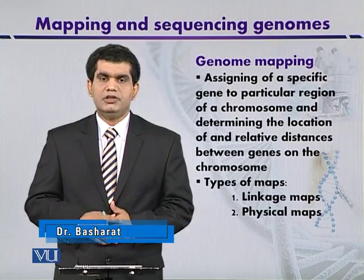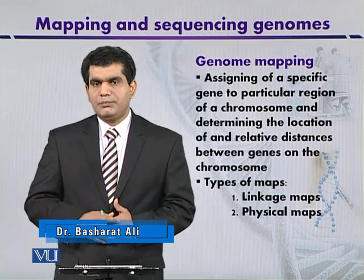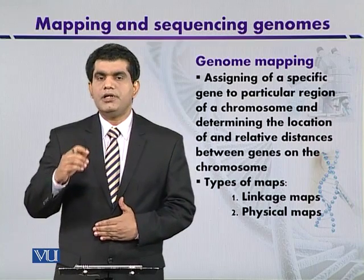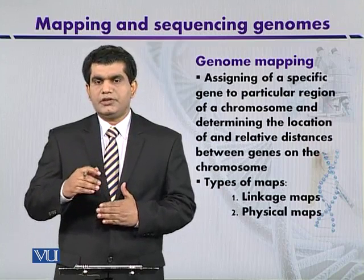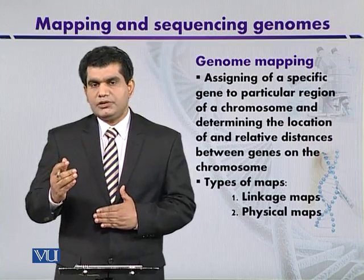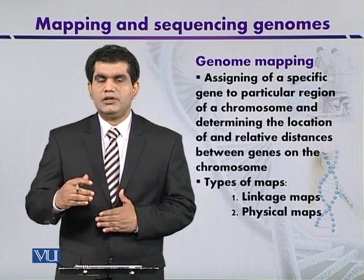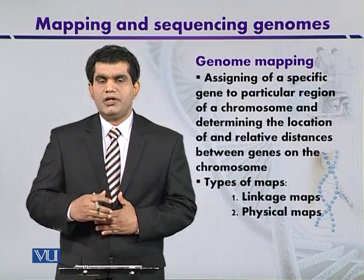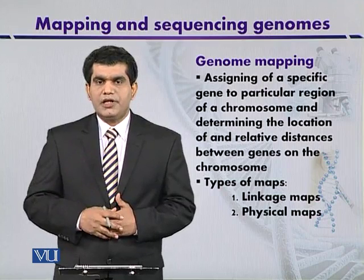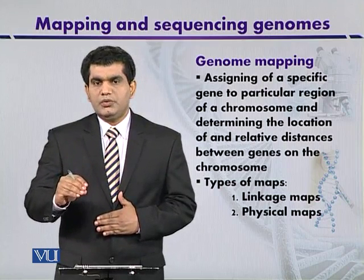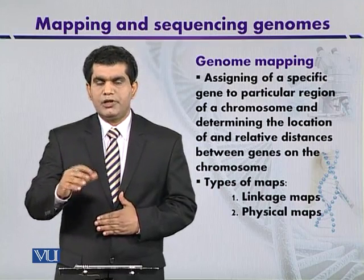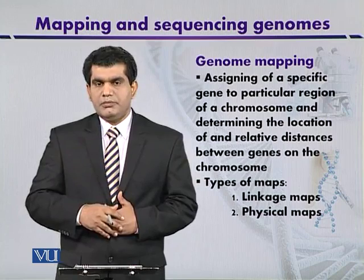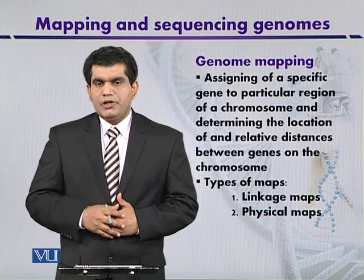The first topic is genome mapping. Genome mapping is the process by which a specific gene is designated or assigned to a particular region of the chromosome. After assigning a particular location, we can also point out the relative distances between different genes located in the genome or on a chromosome. Genome mapping allows us to pinpoint not only gene locations on chromosomes but also the distances between genes in terms of nucleotide base pairs.